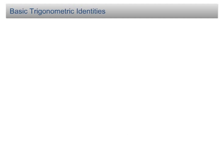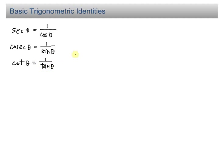Now we'll start with some simple trigonometric ratios. The first one: secant θ equals 1 over cos θ, cosecant θ equals 1 over sin θ, cotangent θ equals 1 over tan θ, and tangent θ equals sin θ over cos θ. Therefore, cotangent θ can also be written as cos θ over sin θ. As you can see, we can always write sec θ, cosec θ, tan θ, and cot θ in terms of sin θ and cos θ only.